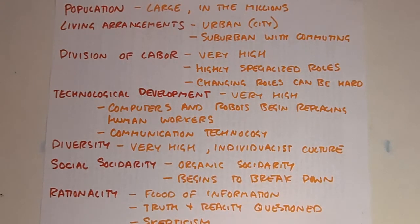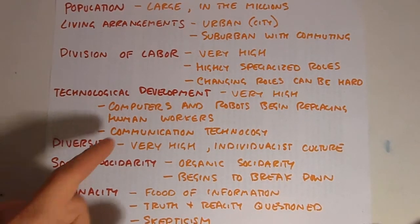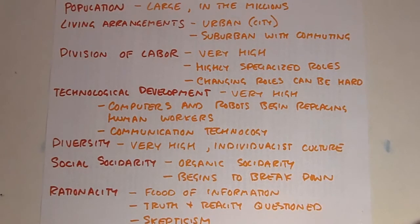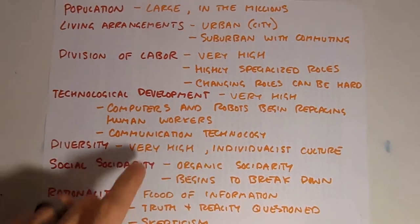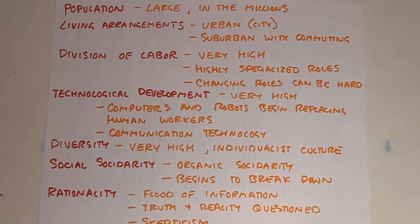The only place they may know in the city, for example, is their office or the place they eat lunch. This further disconnects them from those around them. Technological development is very high — computers and robots begin replacing human workers, which again disconnects people from their working environment. Communication technology is also very high, allowing people to communicate not with someone right next to them, but with someone on the other side of the world, which further enhances the ability for people to choose their own individual culture.